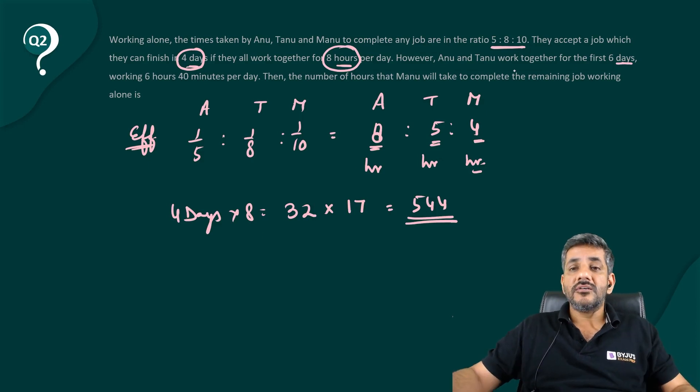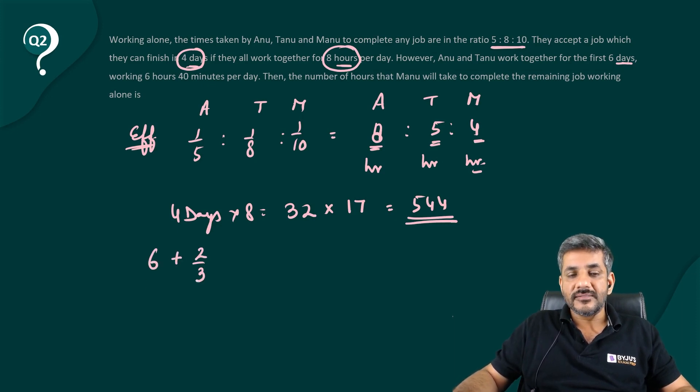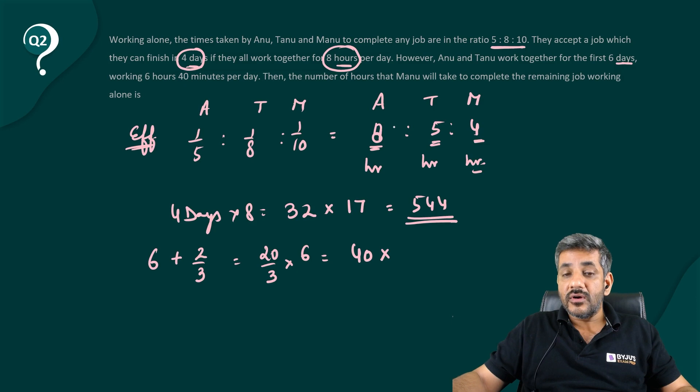Now, he says, Anu and Tanu work for 6 days working 6 hours 40 minutes per day. Now, 6 hours 40 minutes means 6 plus 2 by 3 hours. 40 minutes is 40 by 60 hours. So it is 20 by 3 hours and they worked for 6 days. That means, they worked for 40 hours. For 40 hours, Anu and Tanu have worked.